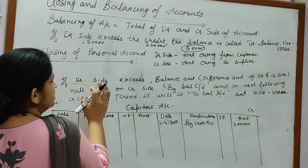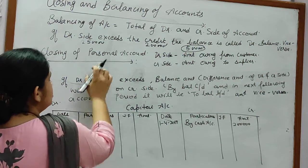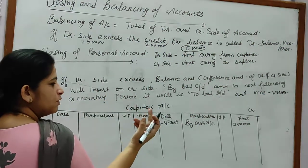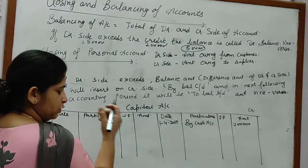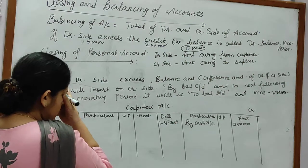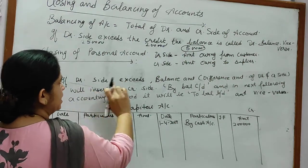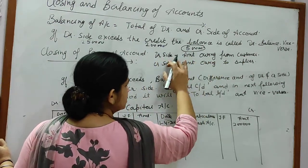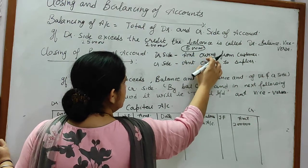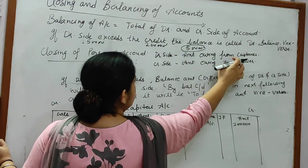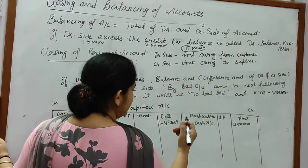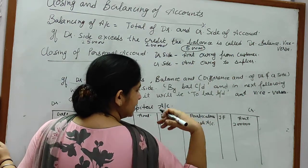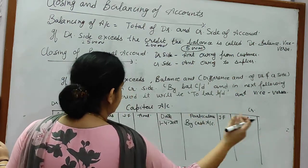Now we consider balancing and the difference amount — closing of account. Closing of account will be according to the nature of the account. First we will do closing of personal account. The debit side of a personal account shows amount owing from the customer, and the credit side shows amount owing to the supplier.